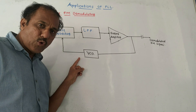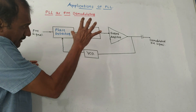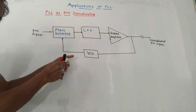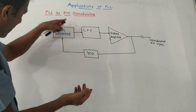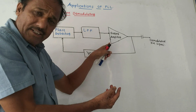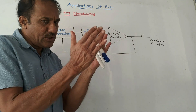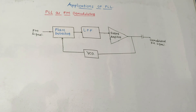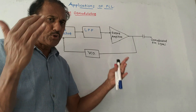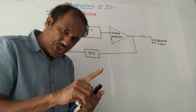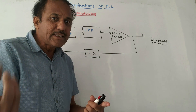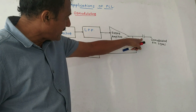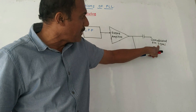Whenever the PLL is locked, the VCO will try to track the incoming frequency — it will track this FM input signal applied at the input of the phase detector. Look at the diagram. The output of the error amplifier gives the difference between the center frequency and the corresponding value. That means the error amplifier produces an output signal proportional to the deviation of the input frequency with respect to the center frequency. This output corresponds to the modulating signal, which is what we want to generate. At the output, we use one capacitor, and the final output is the demodulated FM signal.